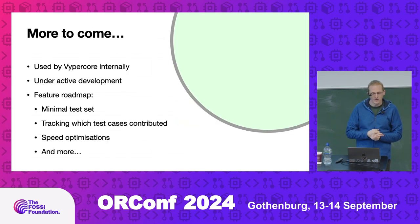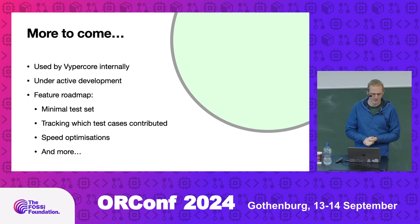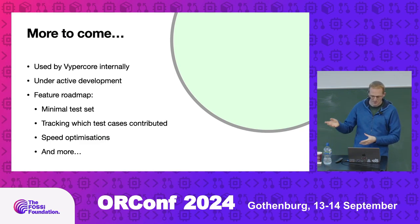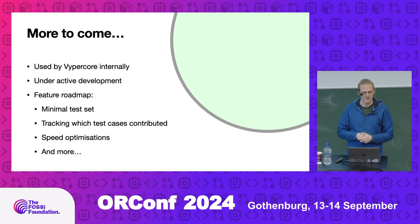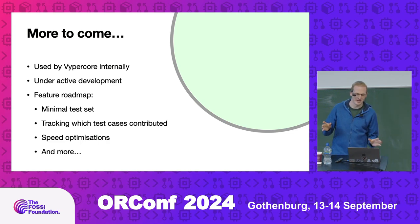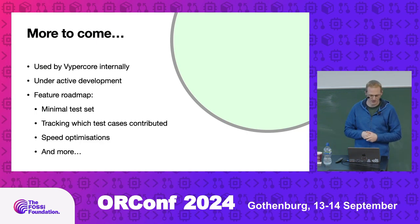We're using this internally — this is our main functional coverage tool, and it's under active development. We've got a feature roadmap — there's more on the GitHub page — but we are working towards better merging, providing a minimal test set that hits the same coverage, and tracking which test cases contributed to which bits of coverage, so you can say this bucket was hit by this test and know where to focus your energy if you've got holes. We haven't optimised any of this for speed yet — it's all written in Python and it's not particularly fast — but until it matures we'll work out where the bottlenecks are. It's pretty good for now.